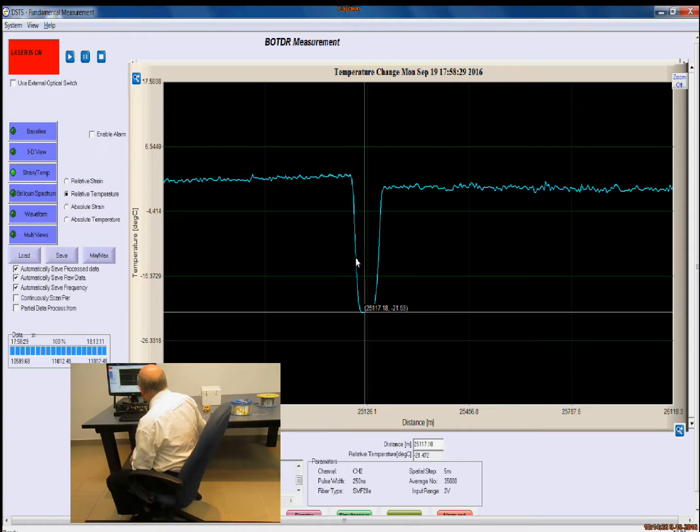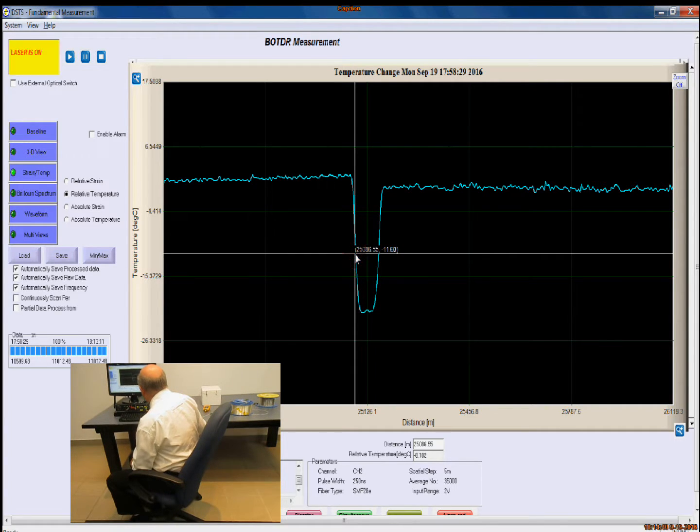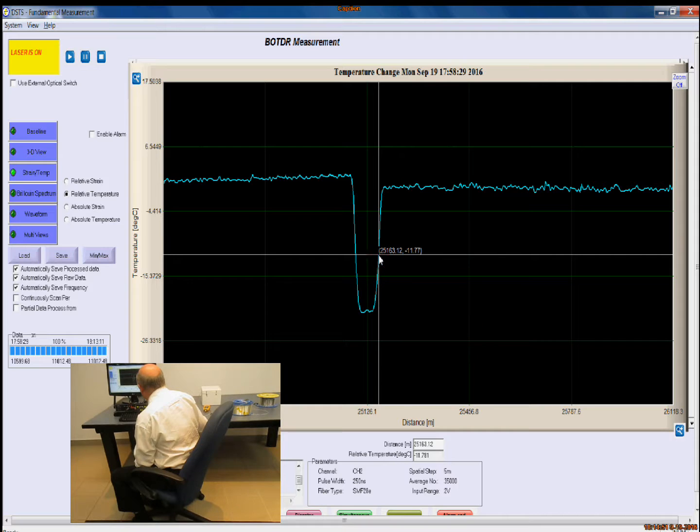You can also show the distance here. If I click on the middle point here and compare, the length reading here is 25.086, whereas on the other side, equal distance, 25.163. So the difference there is a little bit under 80 meters. The exact, it's 77 meters.